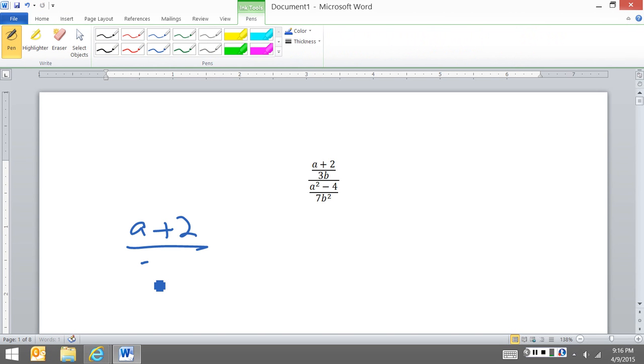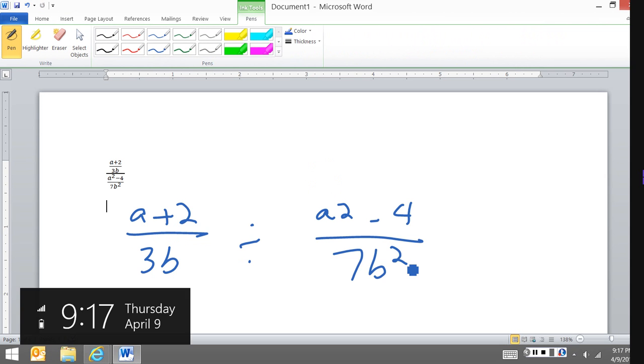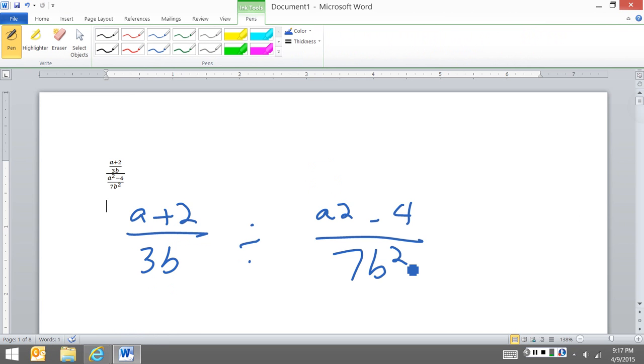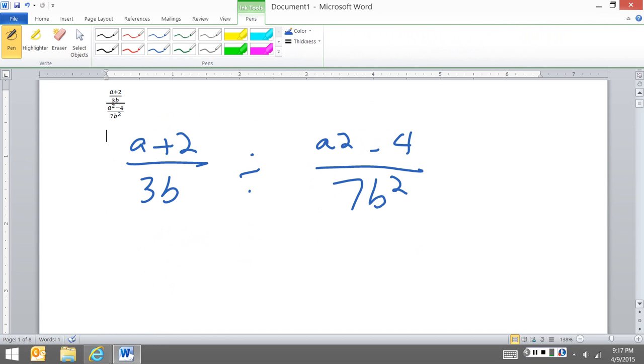Fractions are really just division, so I'm going to rewrite this as a division problem. Once this is rewritten as a division problem, fraction division is just multiplying by the reciprocal, so next I'm going to rewrite as multiplication and flip over that second one.